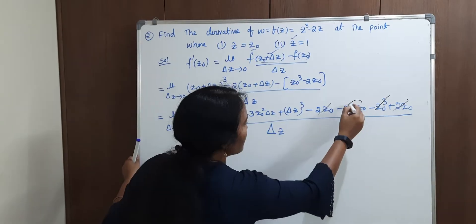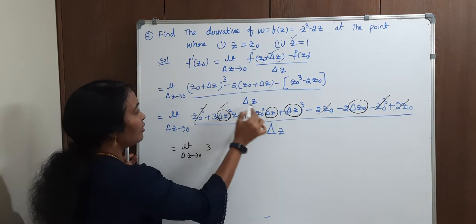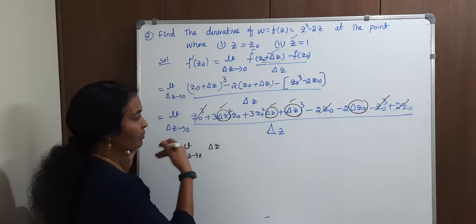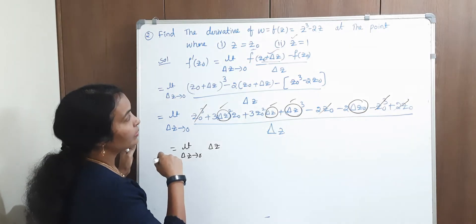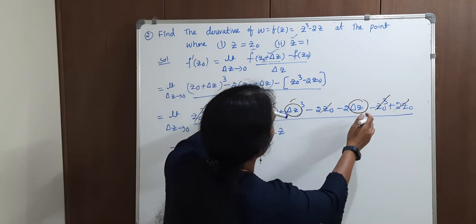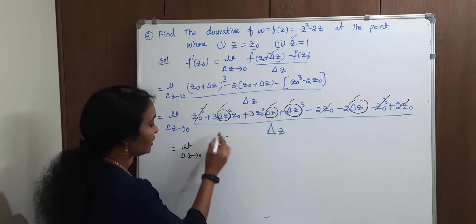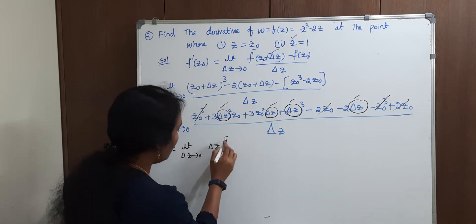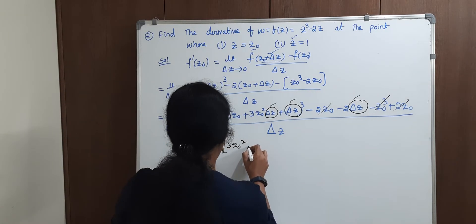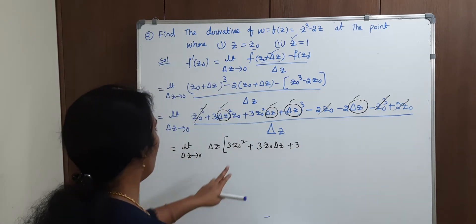Now observe: in the remaining terms, every term has delta z as a factor. We have delta z common in 3 z naught square delta z, 3 z naught delta z square, delta z cube, and minus 2 delta z. Take delta z out. After cancelling delta z with the denominator, the remaining expression inside the limit is 3 z naught squared plus 3 z naught delta z plus delta z squared minus 2.